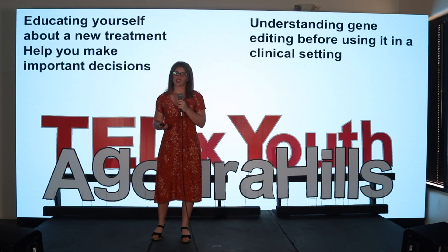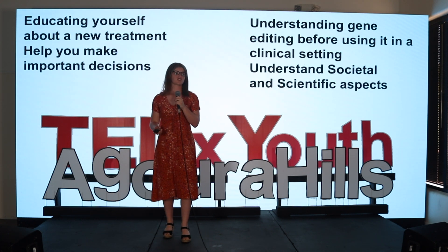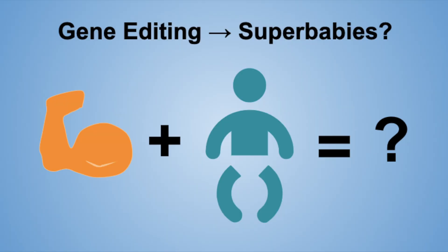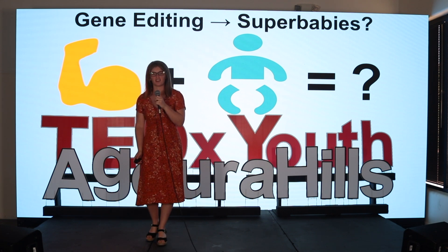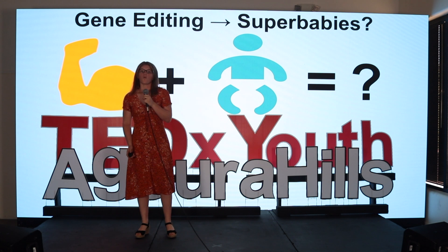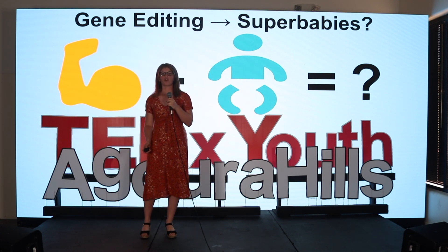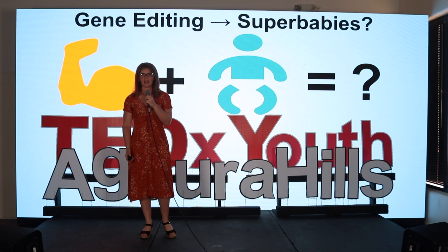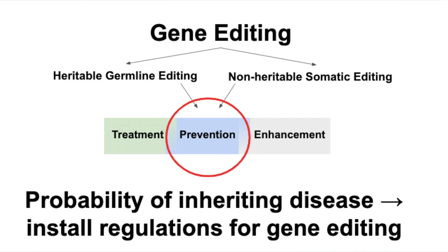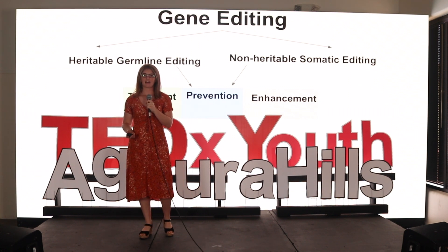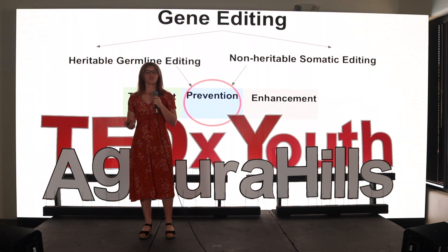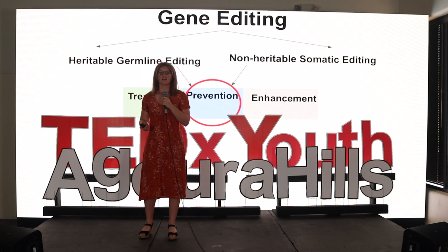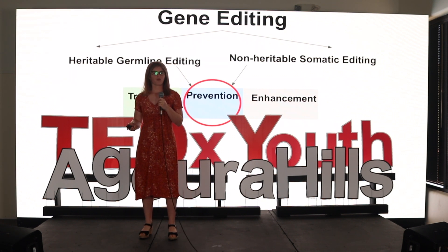However, with new education comes a necessary understanding of the societal and scientific aspects of this technology. When the word gene editing is mentioned, an image of a baby that is stronger, smarter, and more good-looking probably appeared in your mind. While this alleged super baby could be a possibility in the future, it is important now to distinguish between gene therapy and enhancement. Gene editing can be divided into heritable germline editing and non-heritable somatic editing, and further divided into purposes of treatment, prevention, and enhancement. Prevention or risk reduction is important in that it will decrease the overall incidence of illness in the future, and it is a middle ground between gene therapy and over-editing for enhancement.